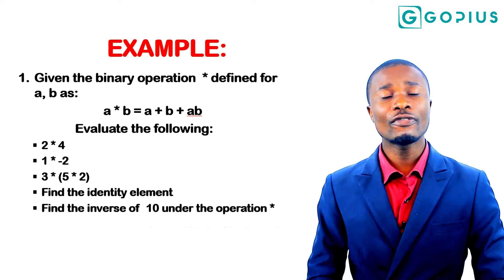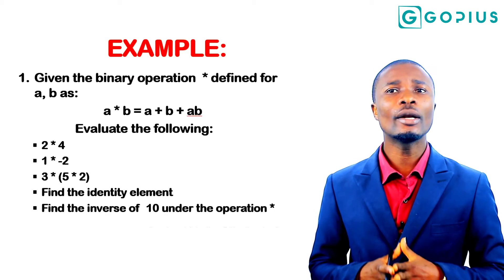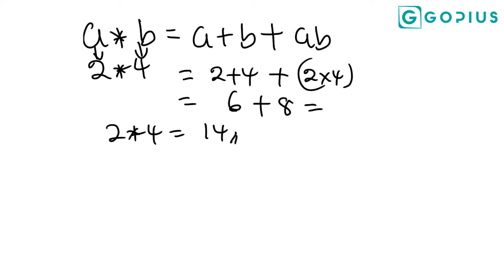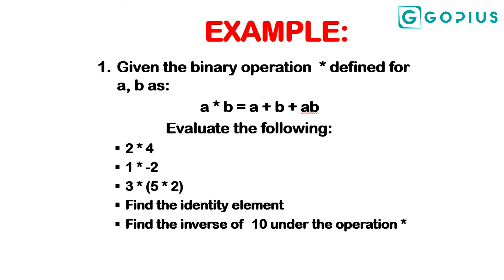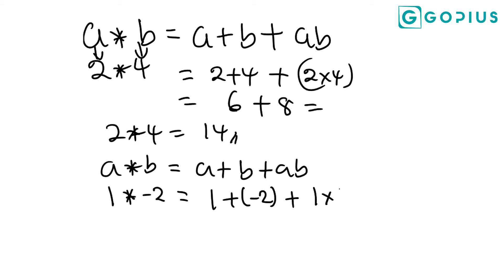The next one we are asked to find is 1★(-2). We are still using the same binary operation, so a★b = a+b+ab. If we are looking for 1★(-2), that means a is now 1 and b is now -2. So on the right hand side wherever we see a we'll replace it as 1, and wherever we see b we'll replace it as -2.